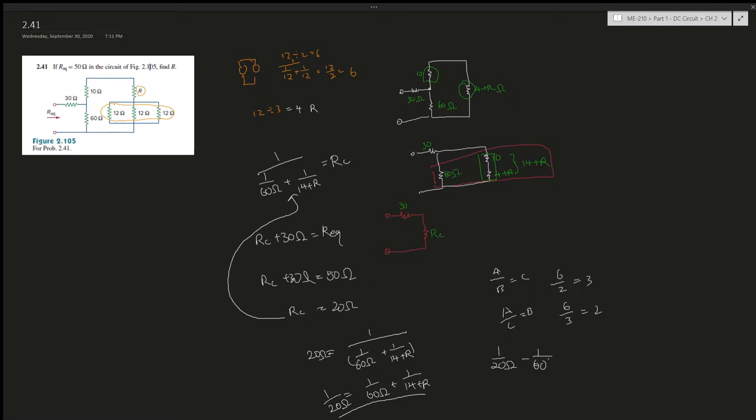And then now it's just basic arithmetic manipulations. We minus 1 over 60 ohms by both sides. So this is 1 over 20 minus 1 over 60, so 3 over 60 minus 1 over 60, that's 2 over 60 ohms, or equals to 1 over 30 ohms equals 1 over 14 plus R.